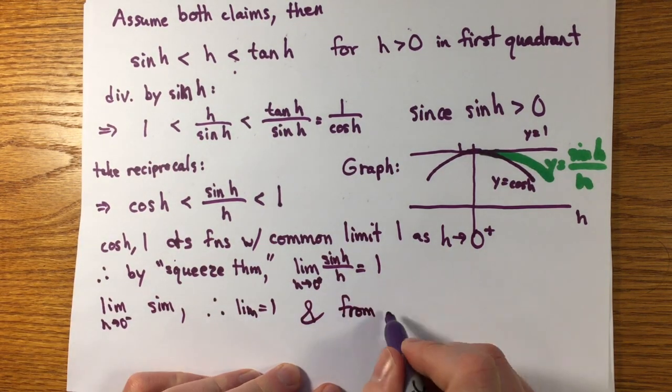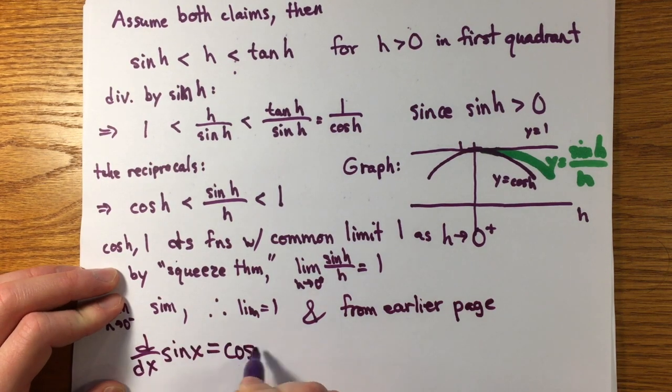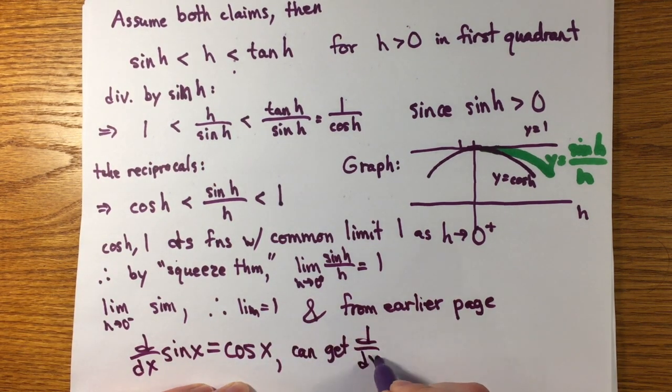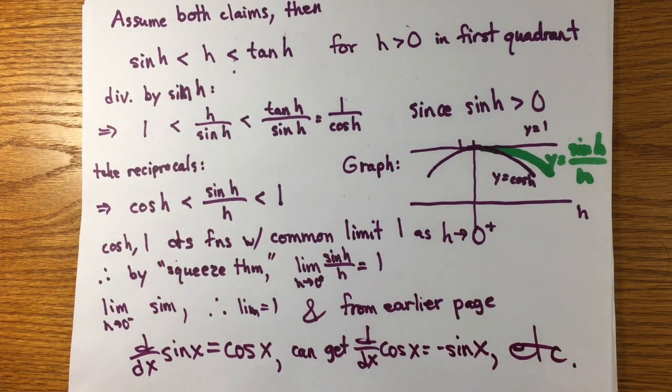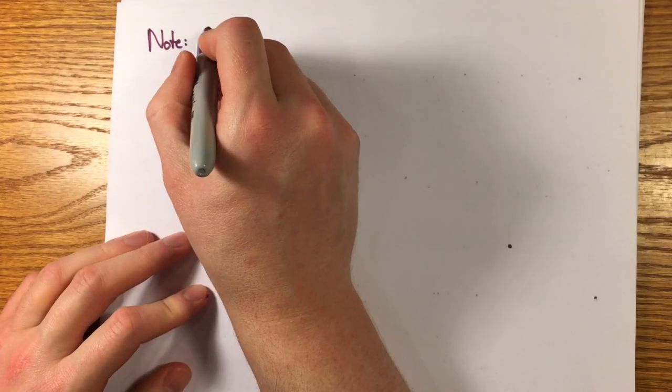The derivative of minus sine, again, is minus cosine, etc. So we get all the information about the derivatives of these functions and all reciprocals and algebraic combinations by the general rules of the derivative.